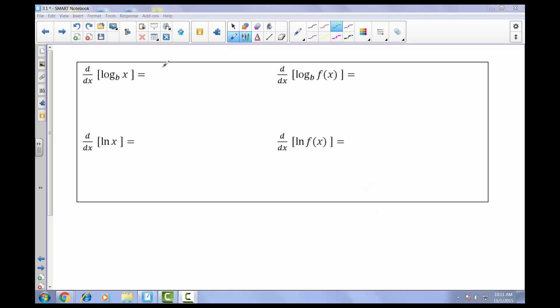Anytime you're taking the derivative of a log with some base b of just x, not a function but literally just x, that will always come out to be 1 over x times the natural log of that base b.